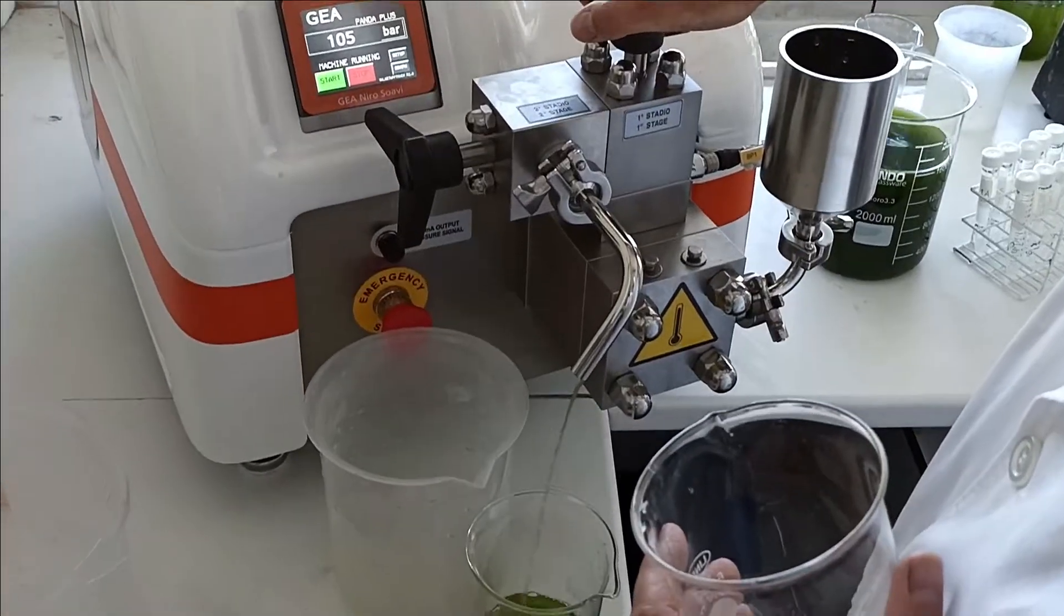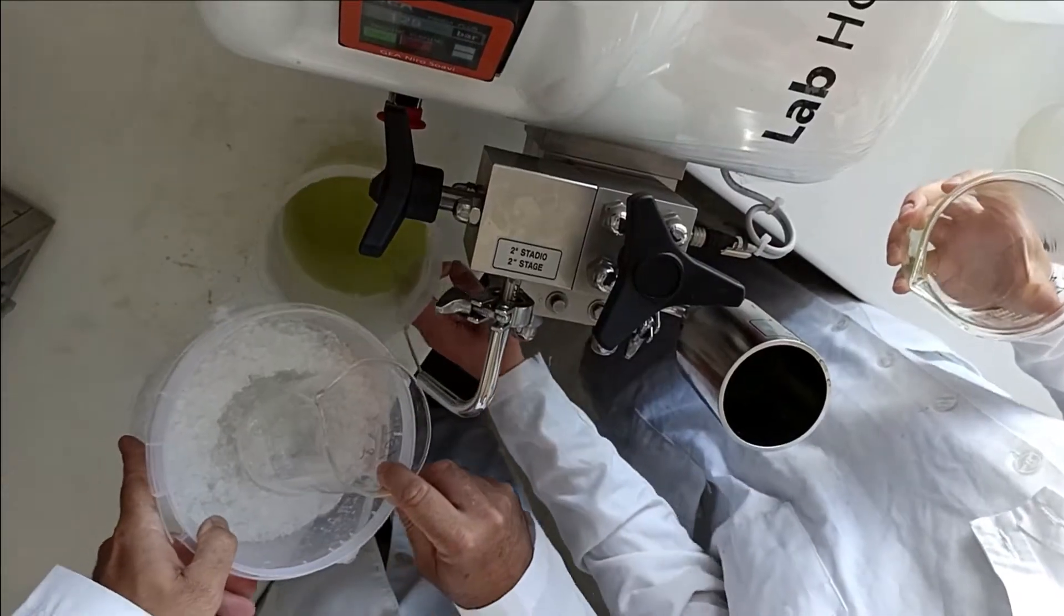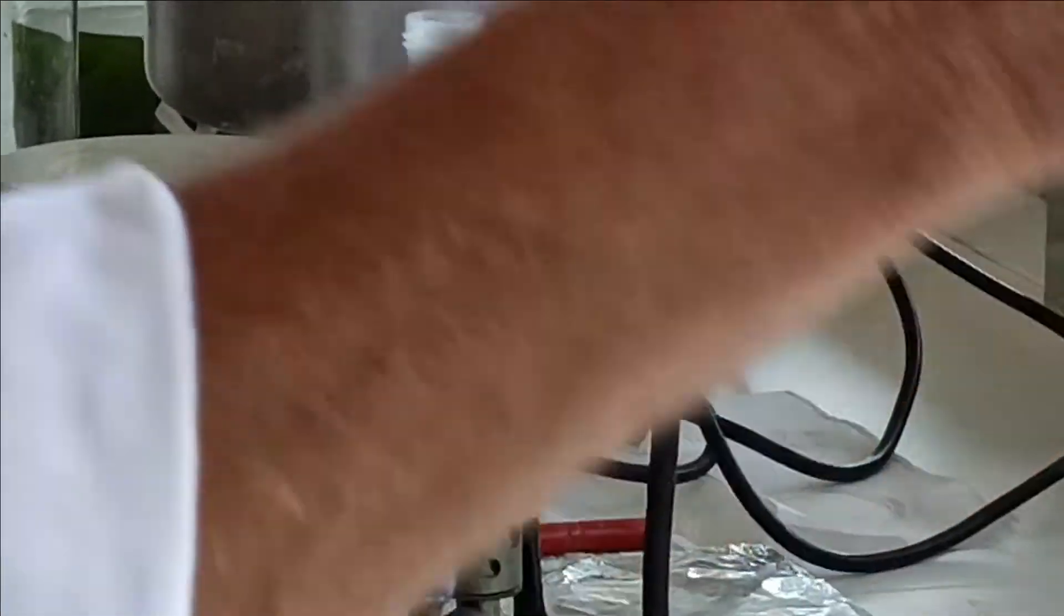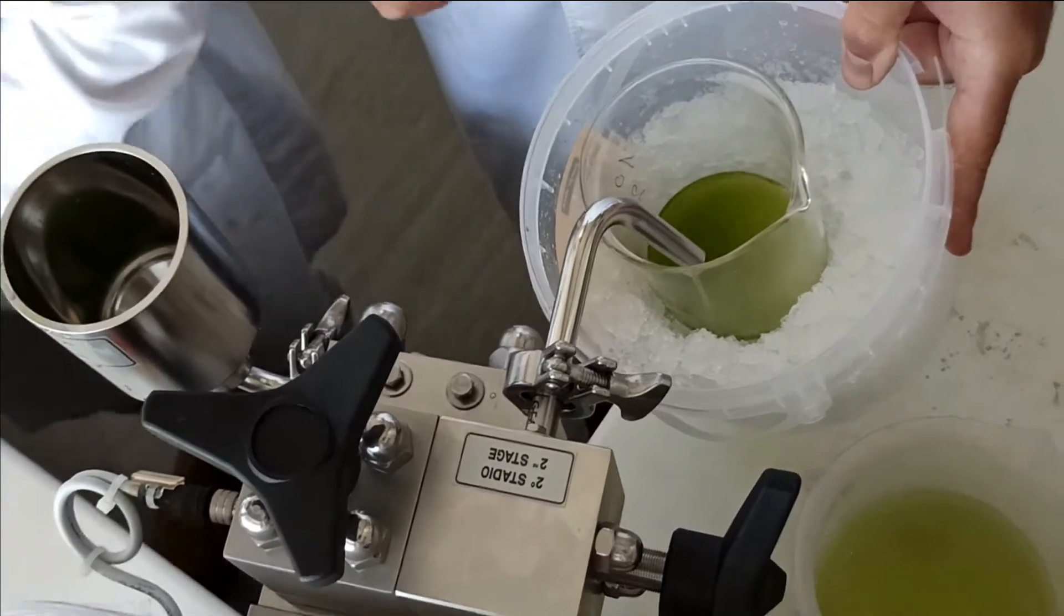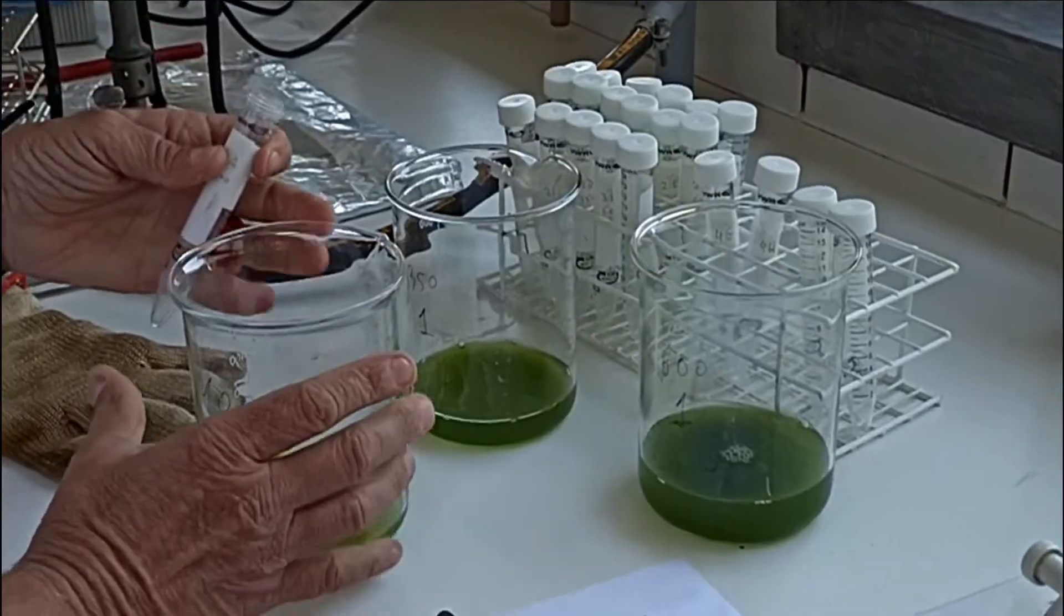After the pressure is stable and the culture is already flowing through the outlet, collect it. If you are only collecting one passage, you may use falcon tubes directly, or for instance, if you still want to apply other passages, consider using a bigger flask.